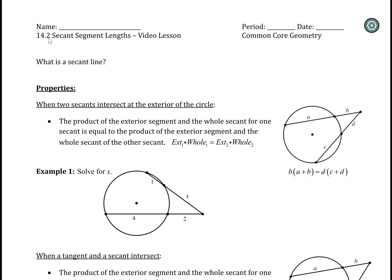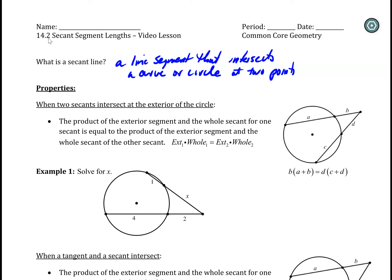Let's refresh our memory as to what a secant line is — that is a line segment that intersects a curve or circle at two points. In the grand scheme of math, we're often dealing with curves or functions. In geometry, we're focusing primarily with circles and how they're interacting. A circle has the curvature part of it, so the same kind of relationship occurs.